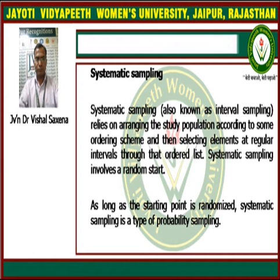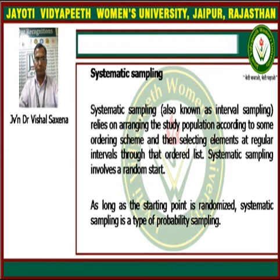Next is systematic sampling, also known as interval sampling. It relies on arranging the study population according to some organizing scheme, and then selecting elements at regular intervals through that ordered list. Systematic sampling involves a random start, and because the starting point is randomized, systematic sampling is considered a type of probability sampling.